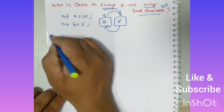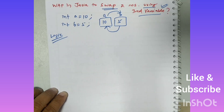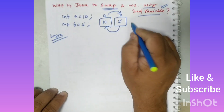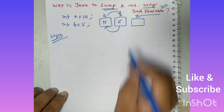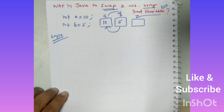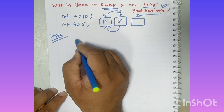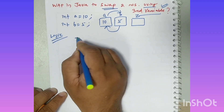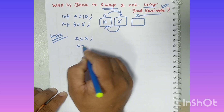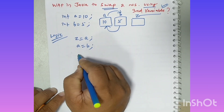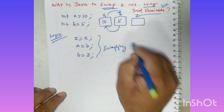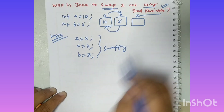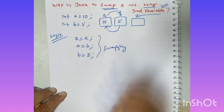What is the logic? I am just telling you the logic. Let's suppose I am using a third variable that is z. So the logic is: z is equal to a, a is equal to b, b is equal to z. This is the logic for swapping — swapping of two numbers using third variable — and the third variable here is z.